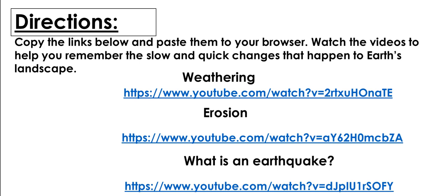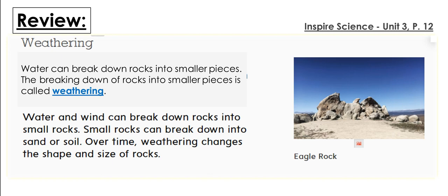Let's review weathering. You can find this information on page 12 of your Inspired Science unit 3. Water can break down rocks into smaller pieces — this breaking down of rocks is called weathering. Water and wind can break down rocks into small rocks, and small rocks can break down into sand or soil over time. Weathering changes the shape and size of rocks, just like the eagle rock in the picture — it got its eagle shape after a very long time due to weathering.